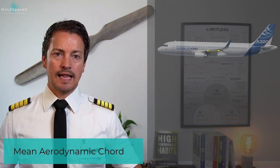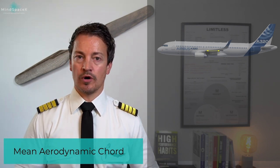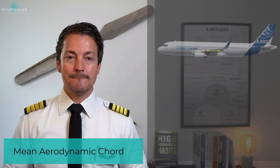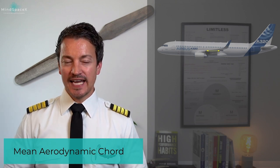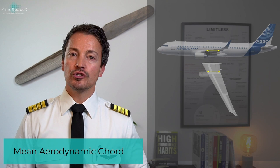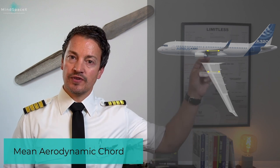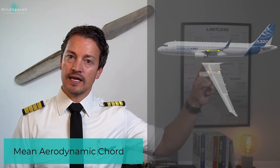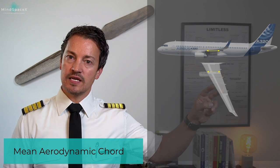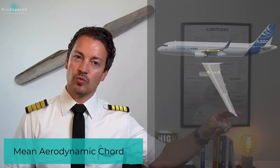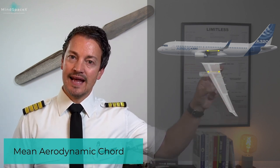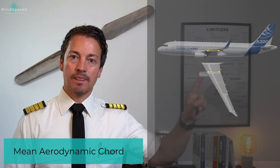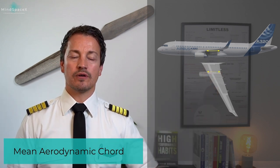So why do we need to calculate the mean aerodynamic chord? On a swept-back wing, which is also tapered from root to tip, you can see how it's tapered — a very long chord line at the root, tapering to become very narrow at the wing tip. That chord length is not the same; it depends on where you measure it.